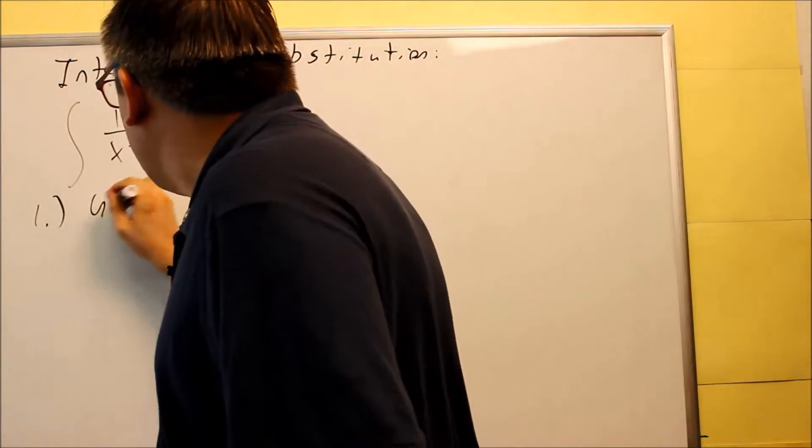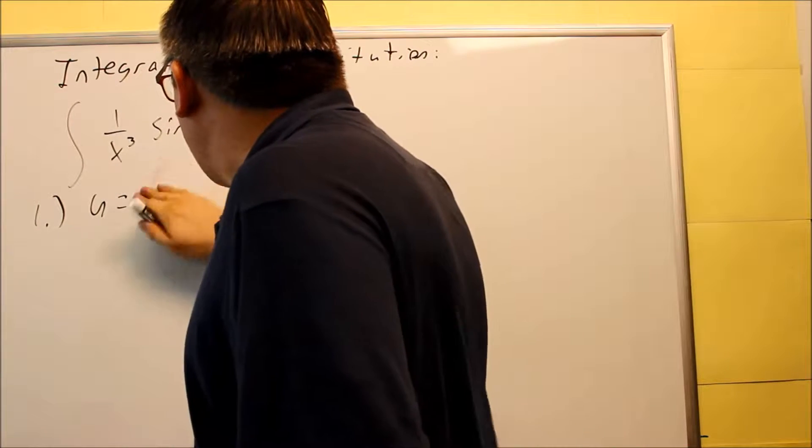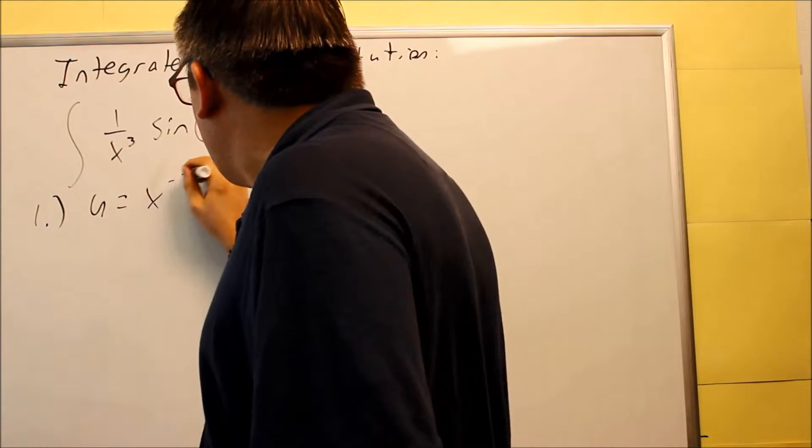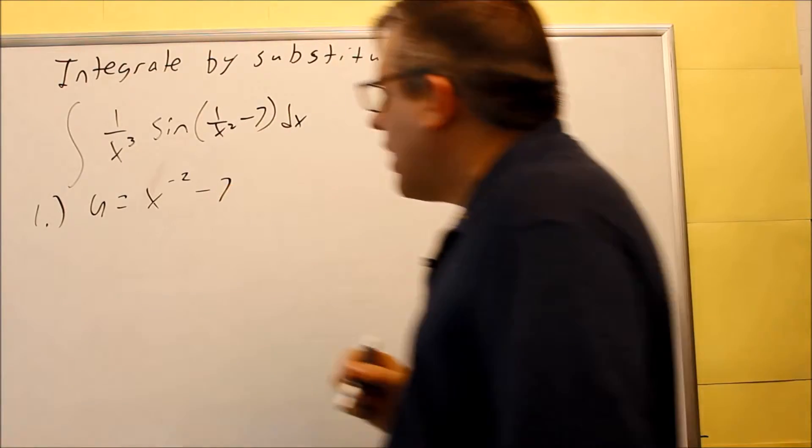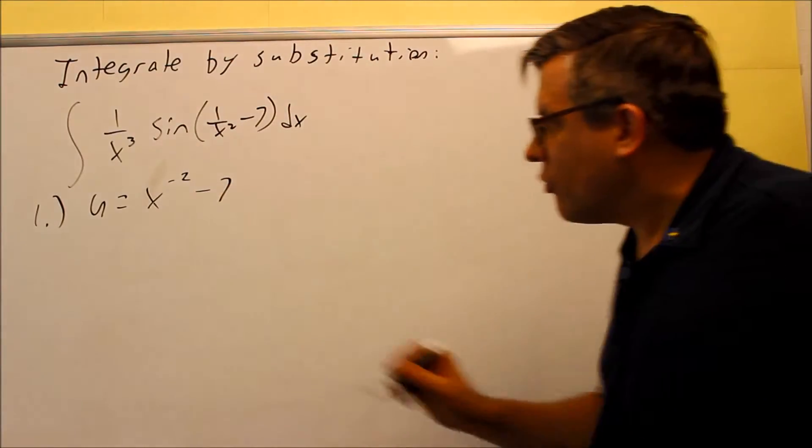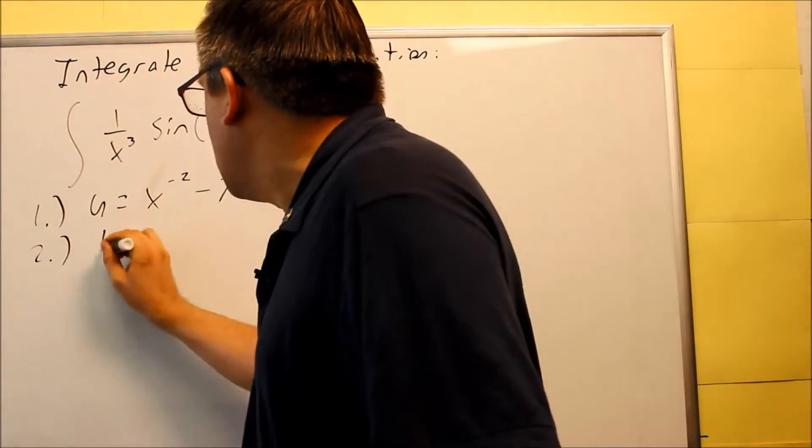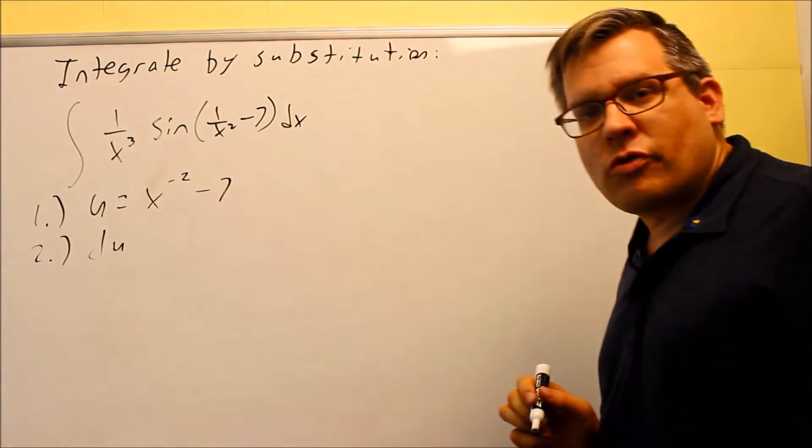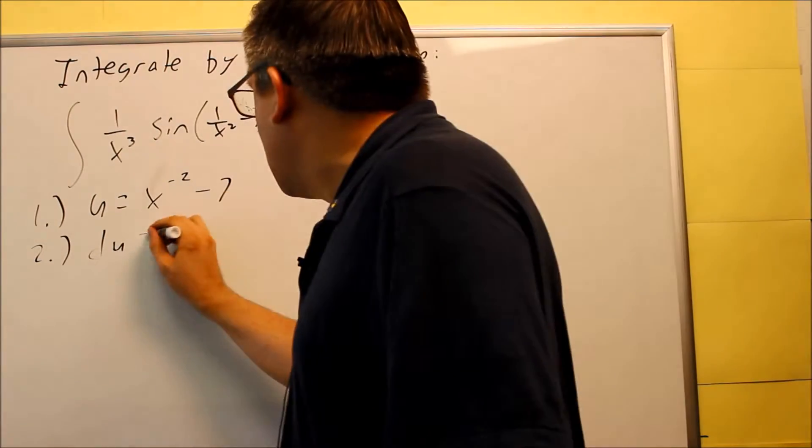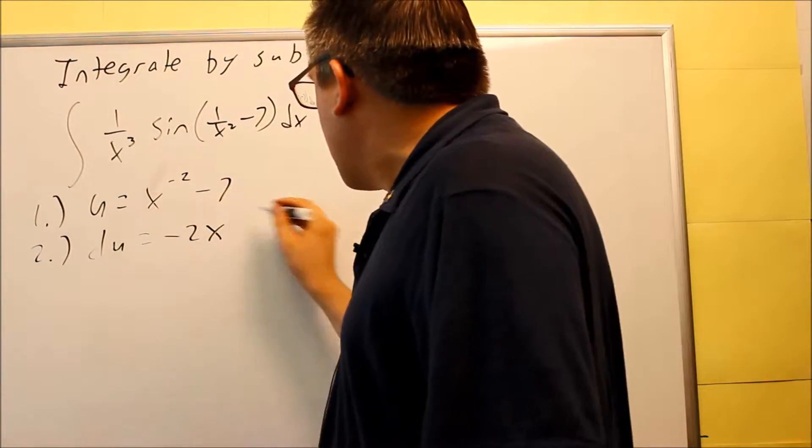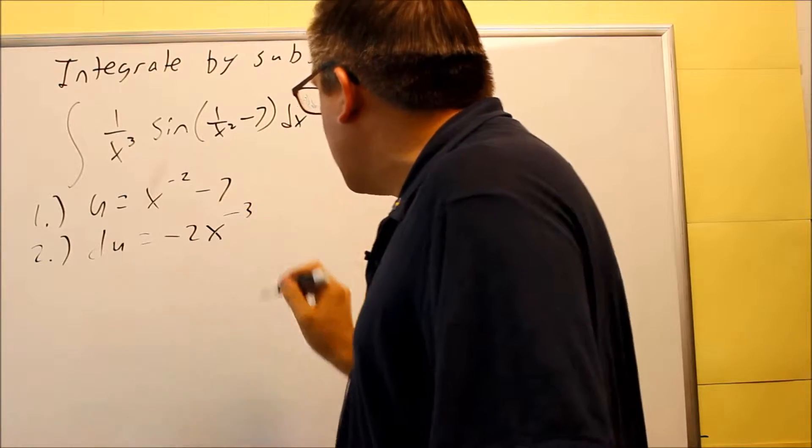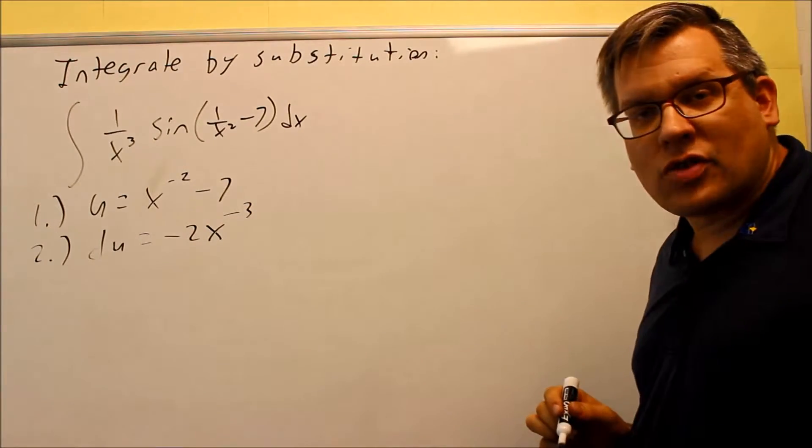So first step, the u is going to be the inside function, and I'm actually going to write it with a negative power like that to make it easier to take the derivative, which we're going to do here in step number 2. Derivative of both sides, derivative of u is du on this side. Negative comes down, subtract 1 from the exponent, and you'll get negative 3. Derivative of negative 7 is 0. Don't forget that you have a dx in the end there.